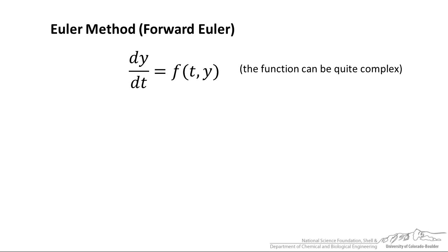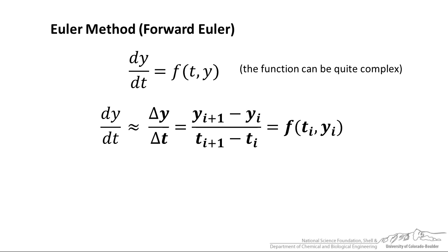Let us start with dy/dt as some function of t and y. We approximate dy/dt as Δy/Δt. Δy can be written y_i+1, where i represents iterations that we are going to take, minus y_i.